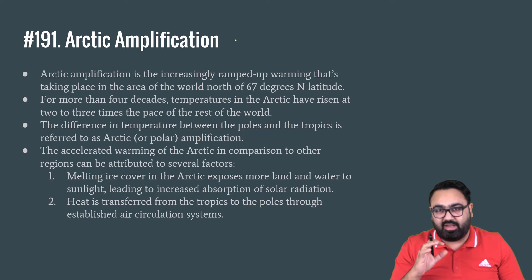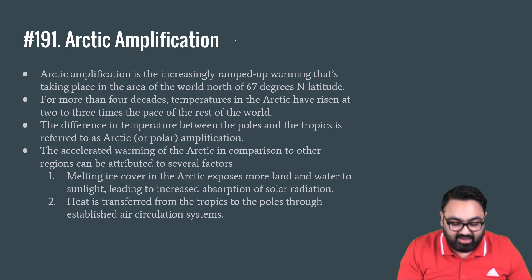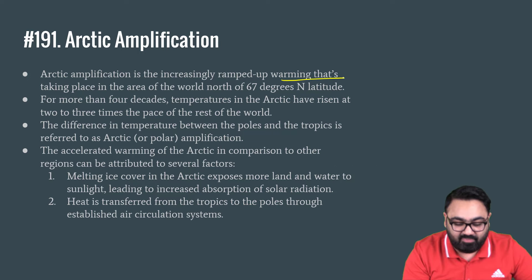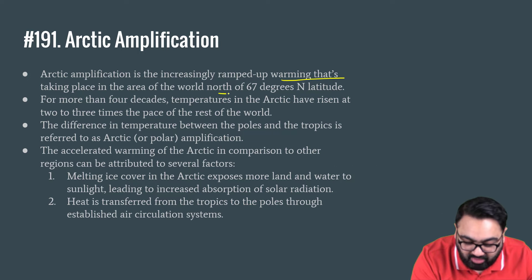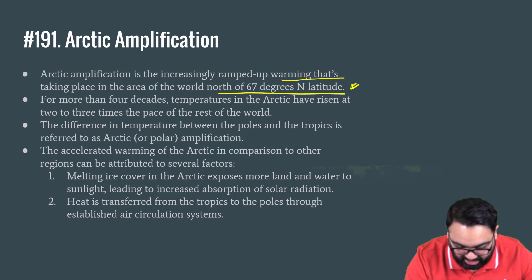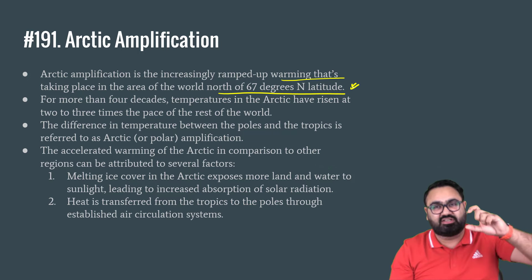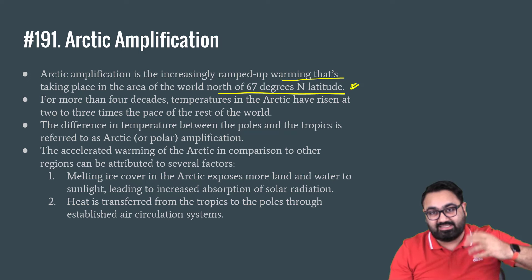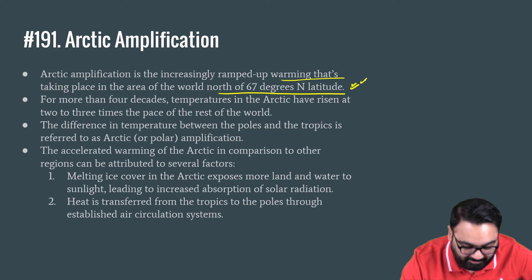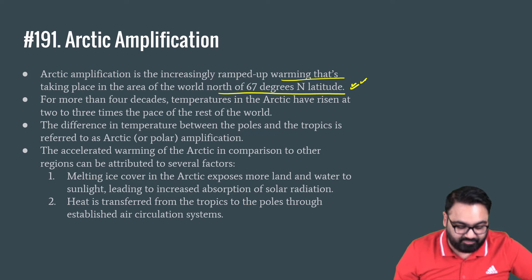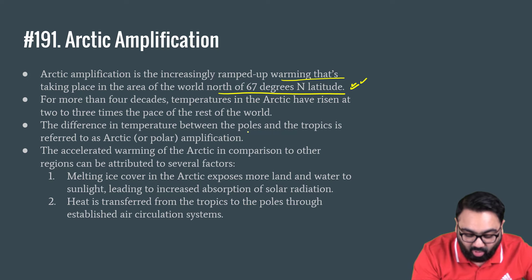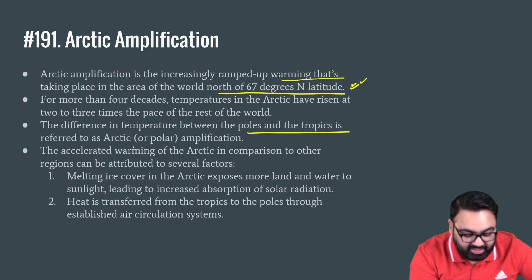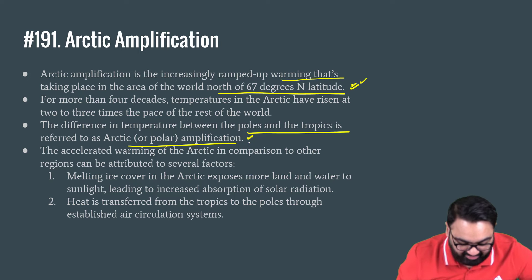Technically, you define Arctic amplification as increasing warming taking place in the area north of 67 degrees north latitude. So do remember — north of 67 degrees north latitude. The difference in temperature between the poles and the tropics is also referred to in the context of Arctic amplification.